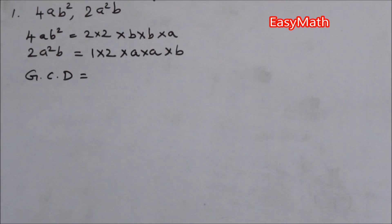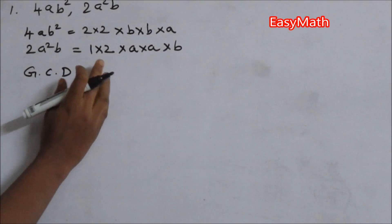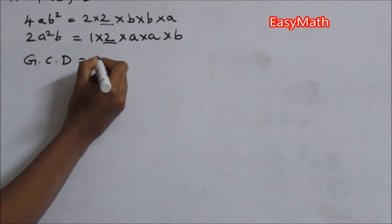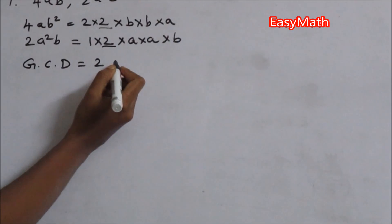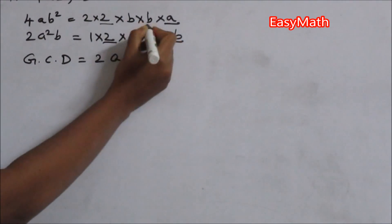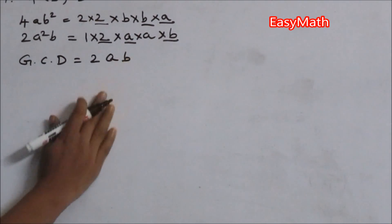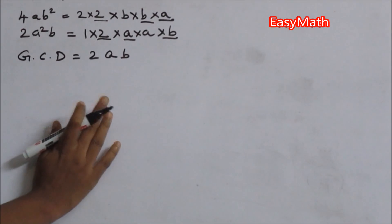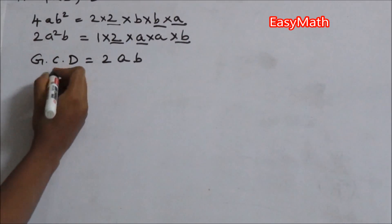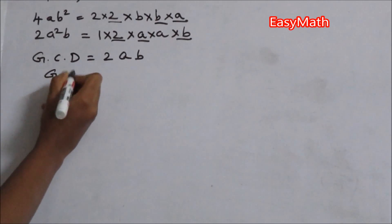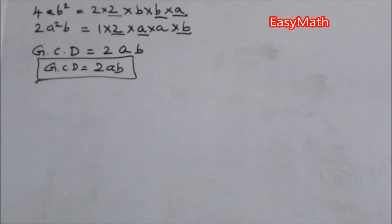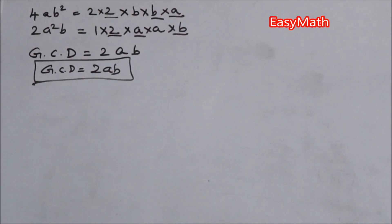Now we find the GCD. The common number in both polynomials is 2. Then the common variables are a and b. So the GCD of this polynomial is 2ab.